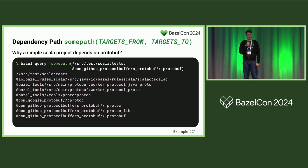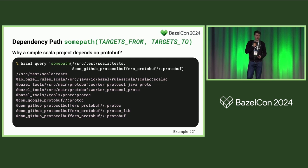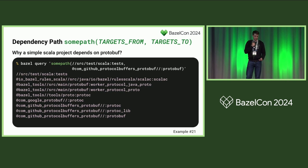Unless you want to understand more about your implicit deps — like here, trying to explain why a target depends on protobuf. We can use the somepath() function, which gives you some path between two targets or sets of targets. We see that from our target, we immediately jump into the Scala compiler wrapper target, which depends on the worker protocol used to talk with Bazel — and this is how we end up with protobuf in this trivial Scala repo.